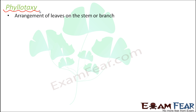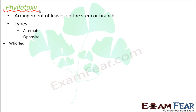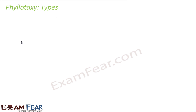There are different ways in which leaves can be arranged on the stem. Broadly, there are three types of phytotaxy: alternate phytotaxy, opposite phytotaxy, and whorled phytotaxy. We will talk about each of these types in detail. The first one is alternate phytotaxy.